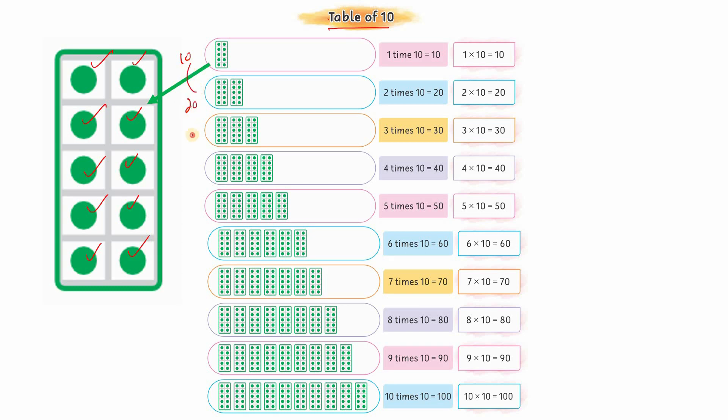In counting by tens, after ten what came? 20, 30, 40, 50, 60, 70, 80, 90, 100. You remember this, right? Now let's see this in repeated addition.